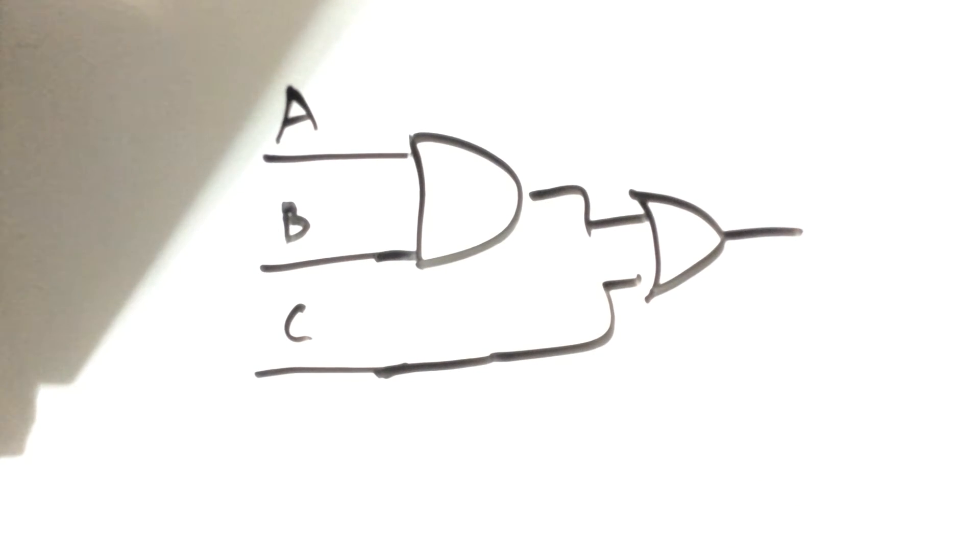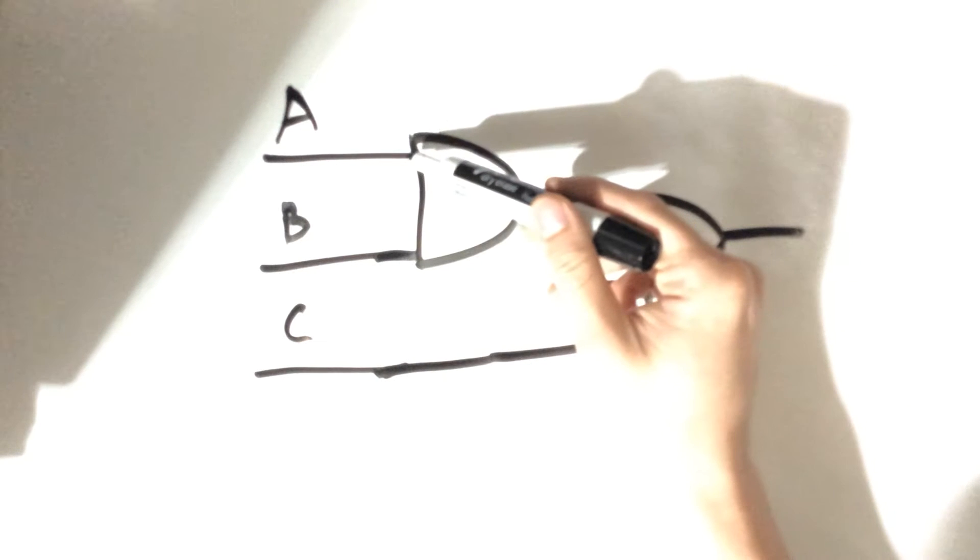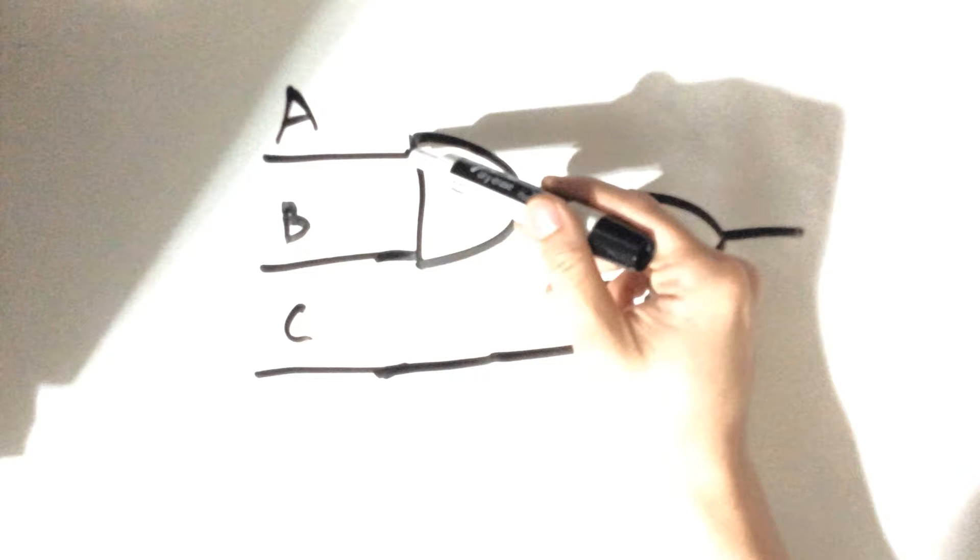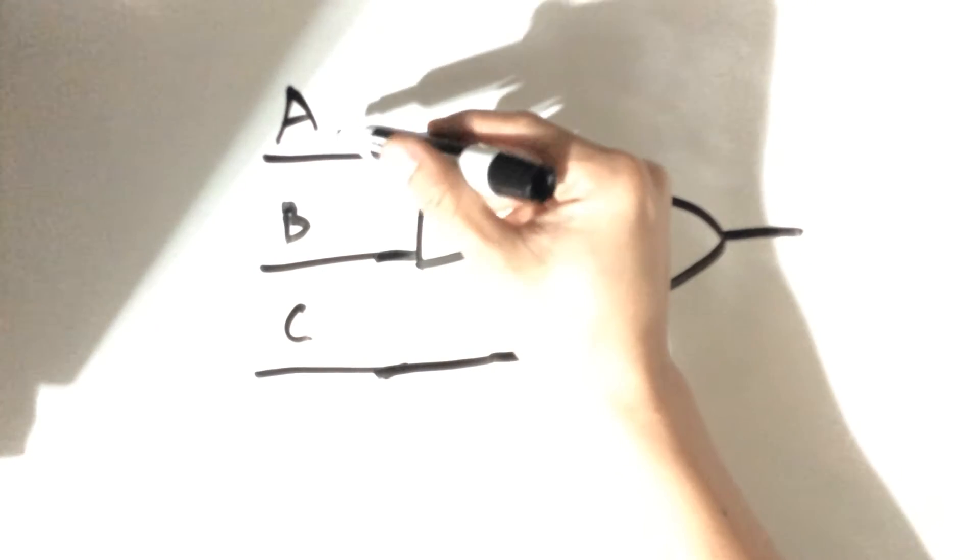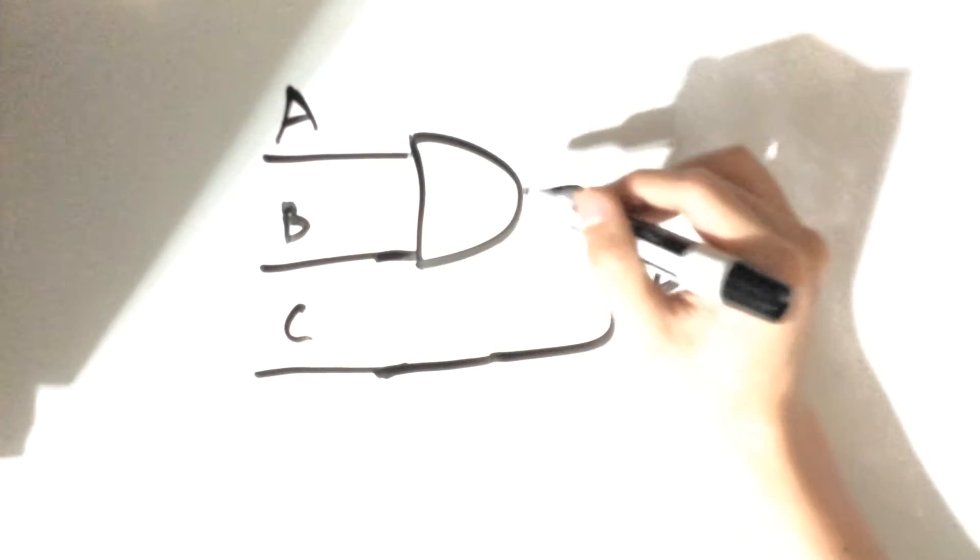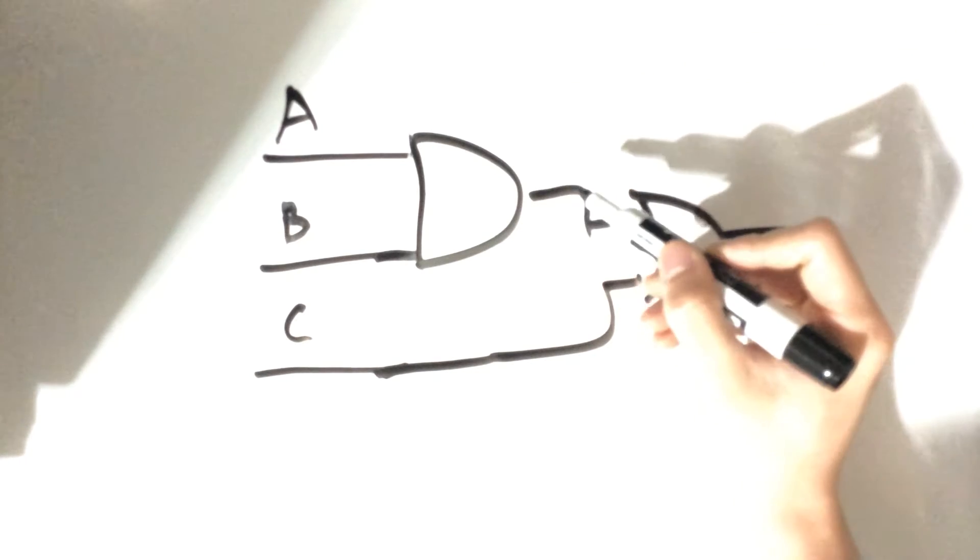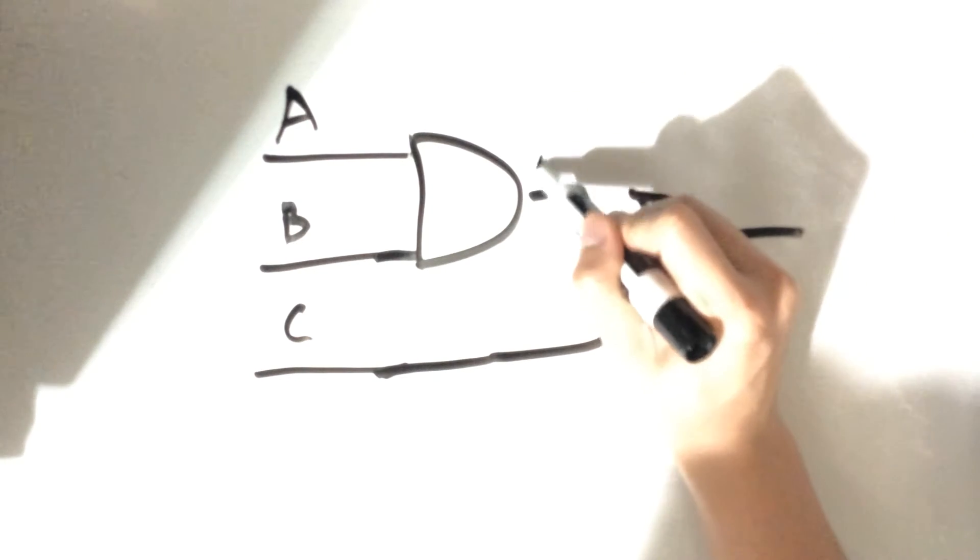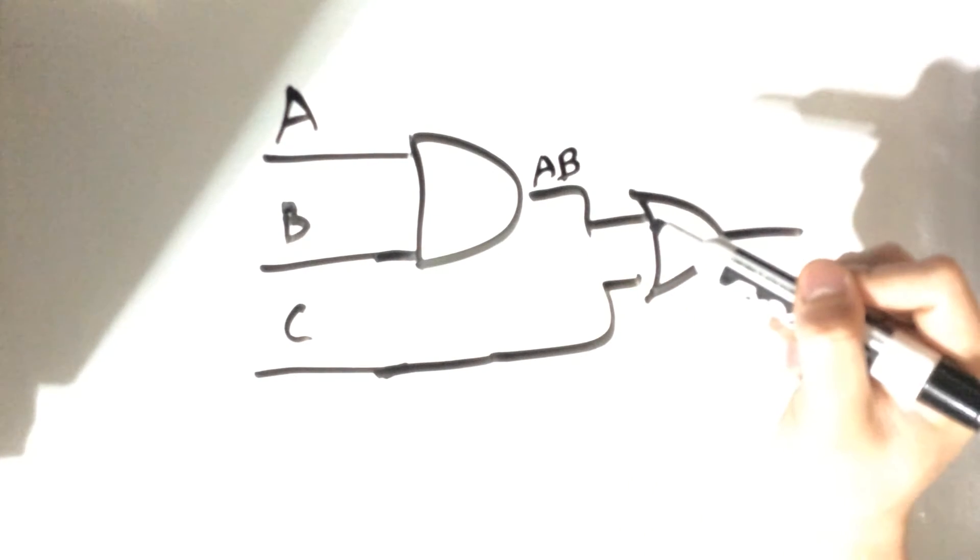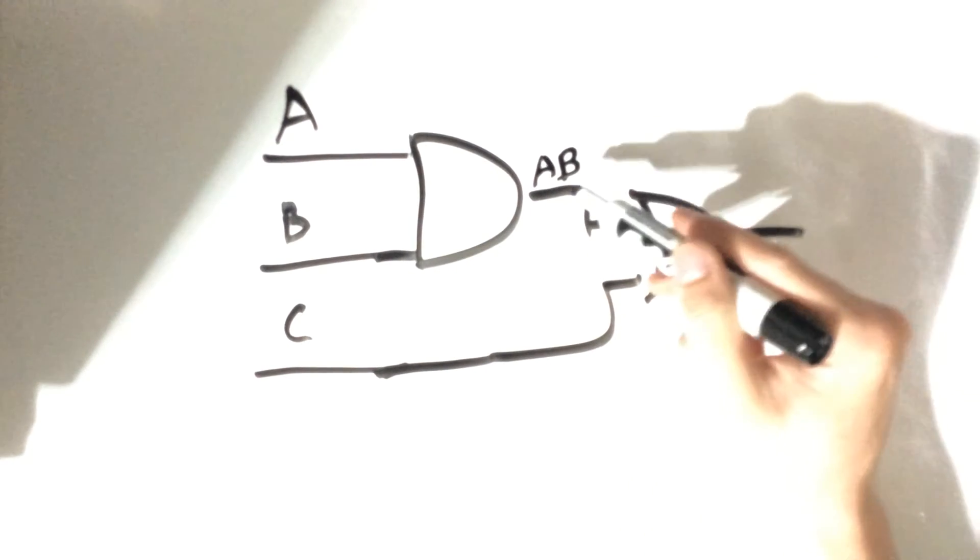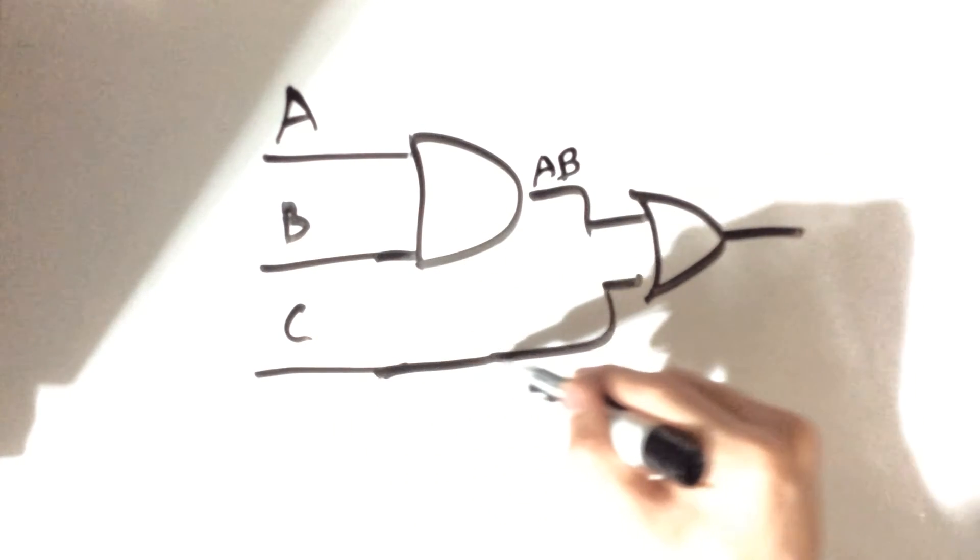Let's begin. We have an AND gate right here that is connected to two inputs, A and B. When A and B go through this AND gate, we are going to get the value of A and B.